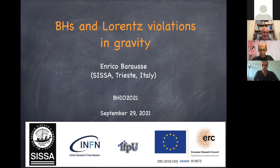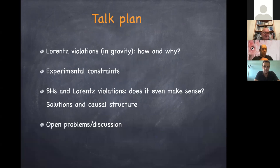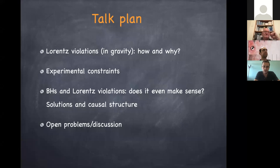Here is the plan of the talk. I'll start by motivating Lorentz violations in gravity — how we go beyond and why we violate Lorentz symmetry. Then I'll discuss experimental constraints on Lorentz violations mainly in the gravitational sector, followed by a discussion of the very concept of a black hole in the absence of Lorentz symmetry. We'll show how you can recover a black hole horizon even without Lorentz symmetry, and close with open problems.